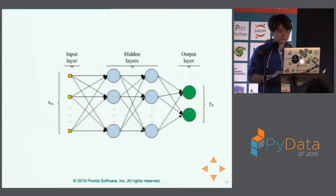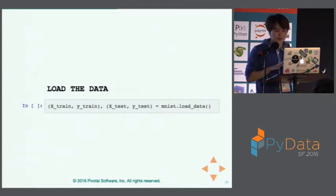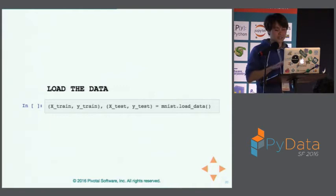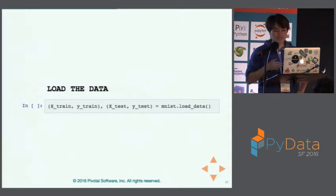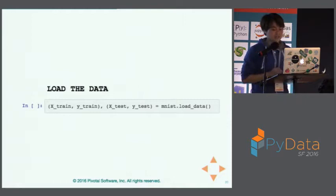Let's continue with the demo. First we load the data. Luckily Keras has some built-in datasets including MNIST, which is used to demonstrate Keras capabilities. Using this option, we can easily load the data and get the train and test datasets. In reality this is not straightforward — normally the data we get from clients is quite messy, and we spend a substantial amount of time understanding, cleaning, and transforming the data.